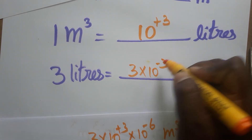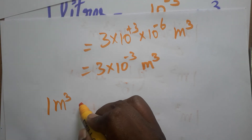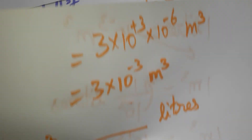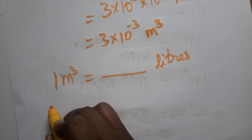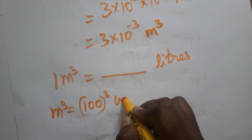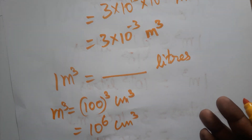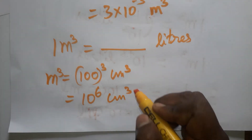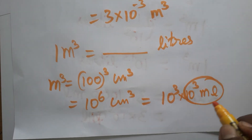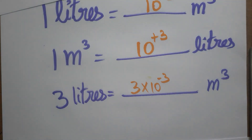Now an alternate way of conversion: one meter cube is equal to dash liters. First convert meter cube to centimeter cube — one meter equals one hundred centimeter, so one meter cube equals one hundred cubed centimeter cube, which is ten power six centimeter cube. Since centimeter cube is the same as ml, this is ten power six ml. Then ten power six ml equals ten power three into ten power three ml, and ten power three ml is one thousand ml which equals one liter — so we get ten power plus three liters. Thank you for watching. If you like my channel please subscribe.